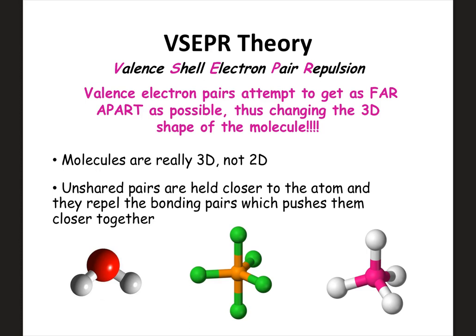In this video, I'm going to walk you through covalent shapes and hybridization. We're not switching gears from covalent — this still involves the sharing of electrons between atoms. The first thing we're going to look at is VSEPR theory. It stands for valence shell electron pair repulsion, but you just need to know what it means: the valence electrons will try to get as far apart as possible in covalent molecules, and sometimes this changes the 3D shape of the molecule.